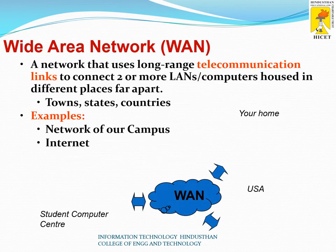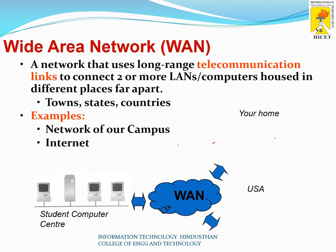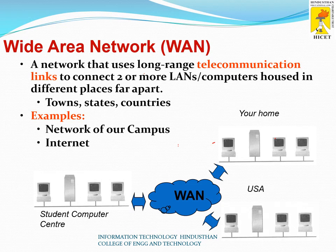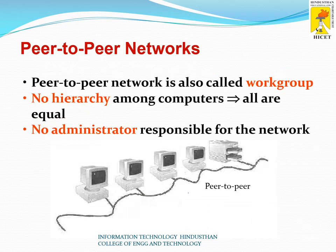Wide area network uses long-distance communication links to connect two or more local area networks or computers in different, far-apart locations. The best example is the Internet. Looking at this diagram, a student computer center connected with your home and with the USA is a typical wide area network. The Internet is the best example of a wide area network.